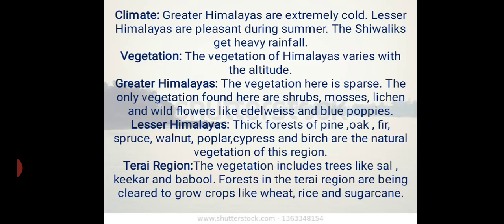In the Tarai region, the vegetation includes trees like sal, kikkar and babul. Forests in the Tarai region are being cleared to grow crops like wheat, rice and sugarcane.